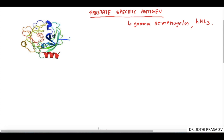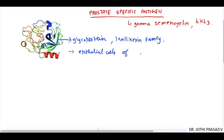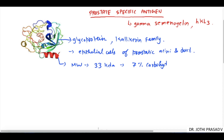PSA or prostate specific antigen is a glycoprotein belonging to the kallikrein family. These are secreted by epithelial cells of prostatic acini and prostatic ducts. The molecular weight of PSA is approximately 33 kilodaltons and it contains about 7% carbohydrate.